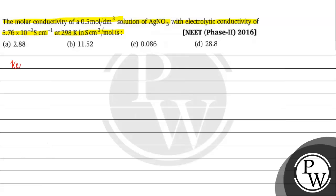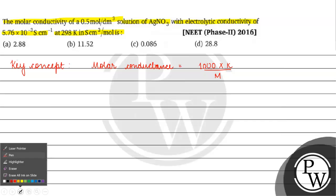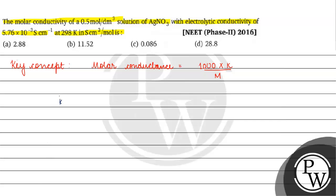The key concept for this question is that molar conductance is basically equal to 1000 × kappa divided by molarity. Here, kappa is the specific conductance, and the value given is 5.76 × 10⁻³ siemens per centimeter inverse.